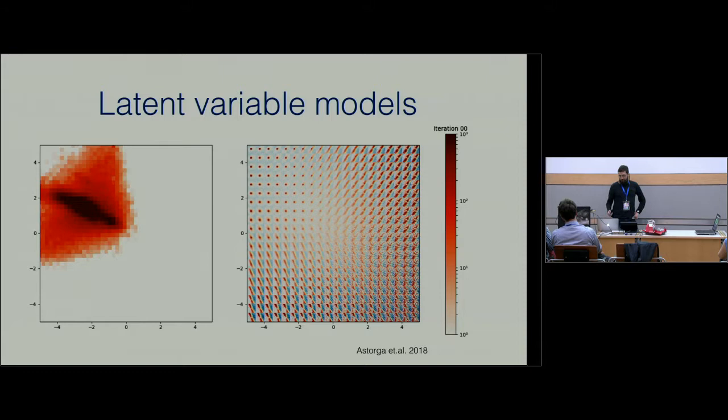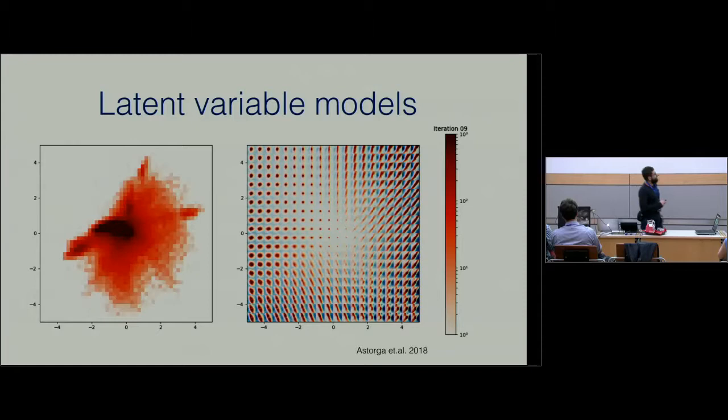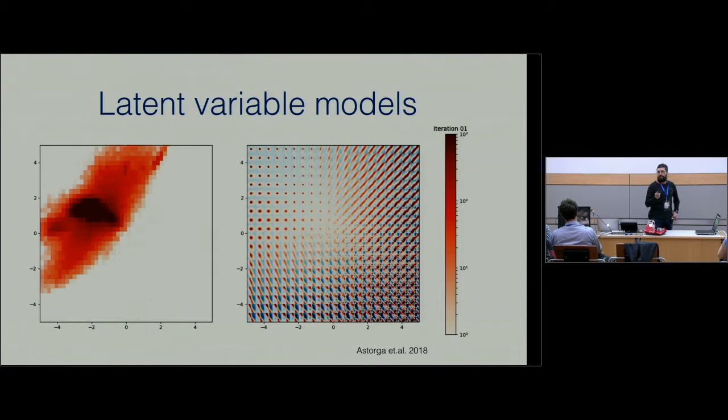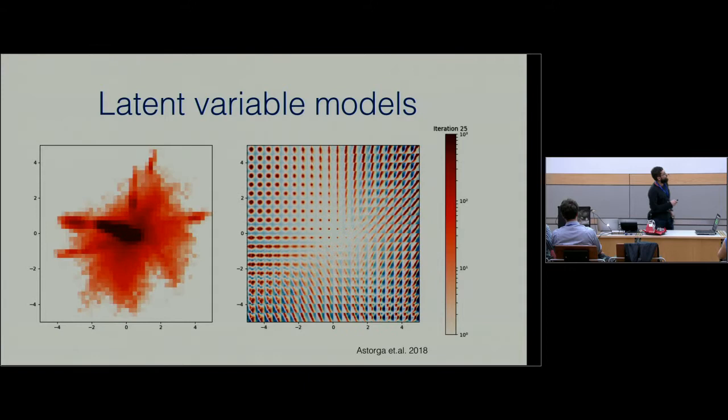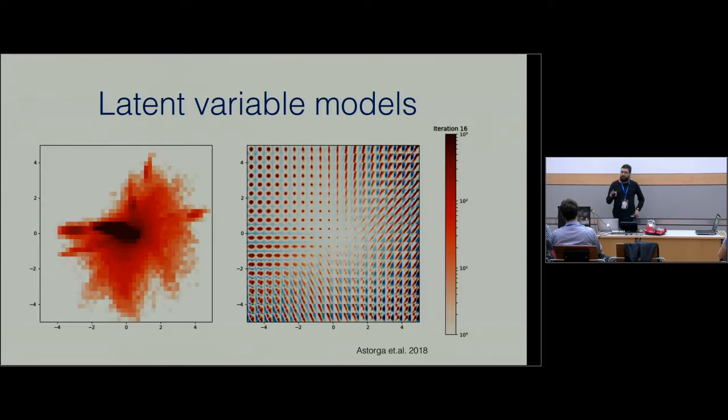Another thing we've been doing is working on latent variable models, basically variational autoencoders. The idea is we have the data here and we transform this into a two-dimensional space using a variational autoencoder. This is also a generative model. These are points generated by the variational autoencoders. You can see that here are point sources, here are the bad columns, and you can see stuff like that. This reminded me a lot about what Kai has been doing with self-organizing maps.